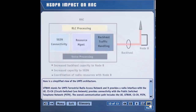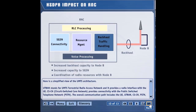Compared to the Node B, the RNC requires fewer changes, most of which are software changes. Higher backhaul capacity and buffer capacity are required. In addition, higher link capacity between the SGSN and the RNC is also required. While scheduling is moved to the Node B, the RNC needs to take care of the configuration of new HSDPA channels.